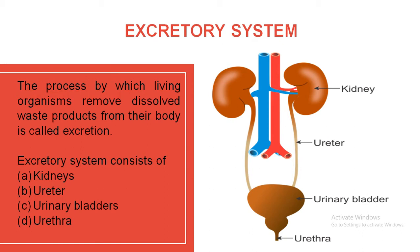Now why is 2.5% urea present? Whatever food you consume — especially protein — by breakdown of it, it will make amino acids and some other products. Urea is basically made up of nitrogen. This is the main thing about the excretory system.